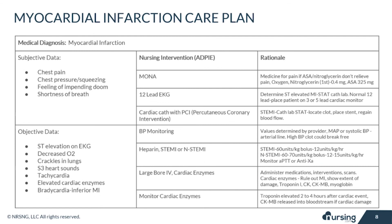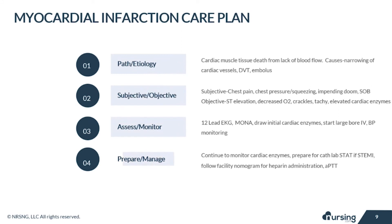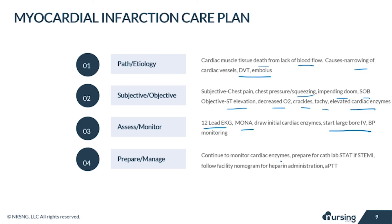Here's a quick review of the MI care plan. An MI occurs from cardiac muscle tissue death from lack of blood flow; causes include narrowing of cardiac vessels, DVT, or an embolus. Subjective data includes chest pain, pressure/squeezing, impending doom, and shortness of breath. Objective data includes ST elevation, decreased O2, crackles, tachycardia, and elevated cardiac enzymes. Nursing interventions include a 12-lead EKG, MONA (medicine for pain, oxygen, nitroglycerin, aspirin), large-bore IV with initial cardiac enzyme draw, BP monitoring, ongoing cardiac enzyme monitoring, cath lab preparation for STEMI, and following your facility's heparin nomogram.